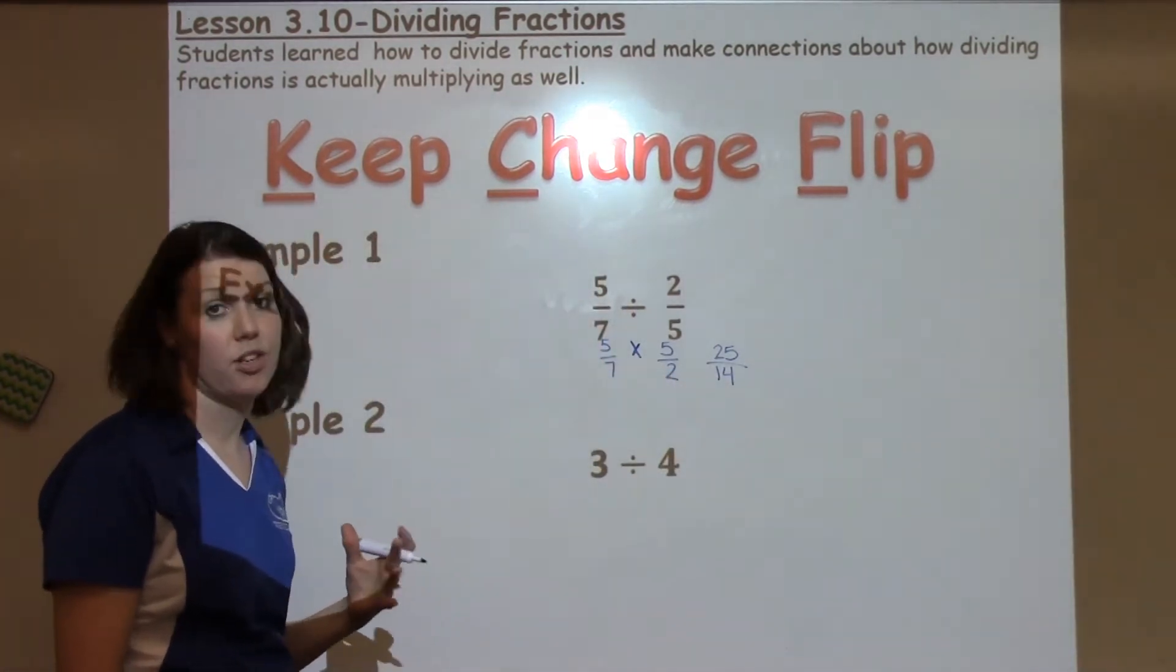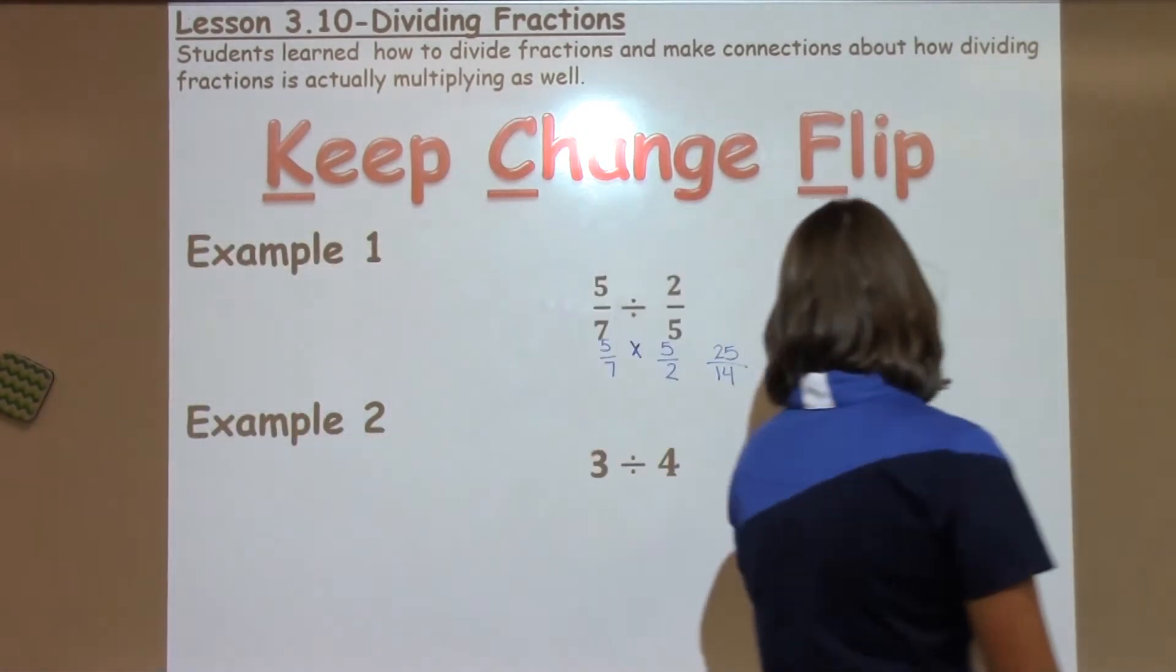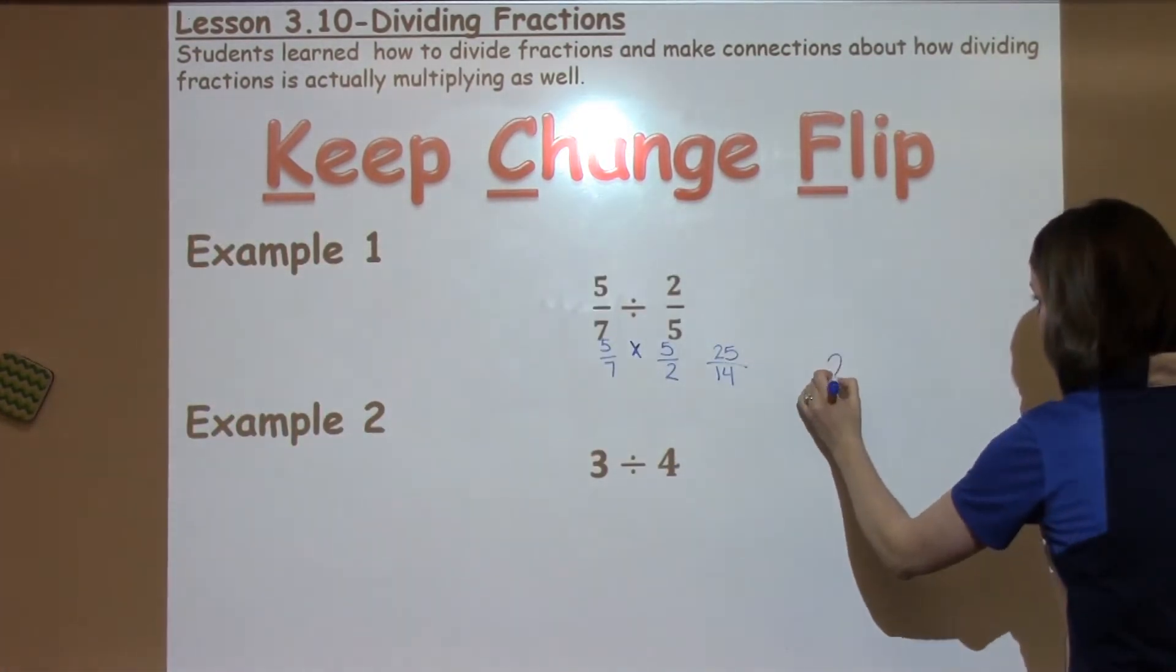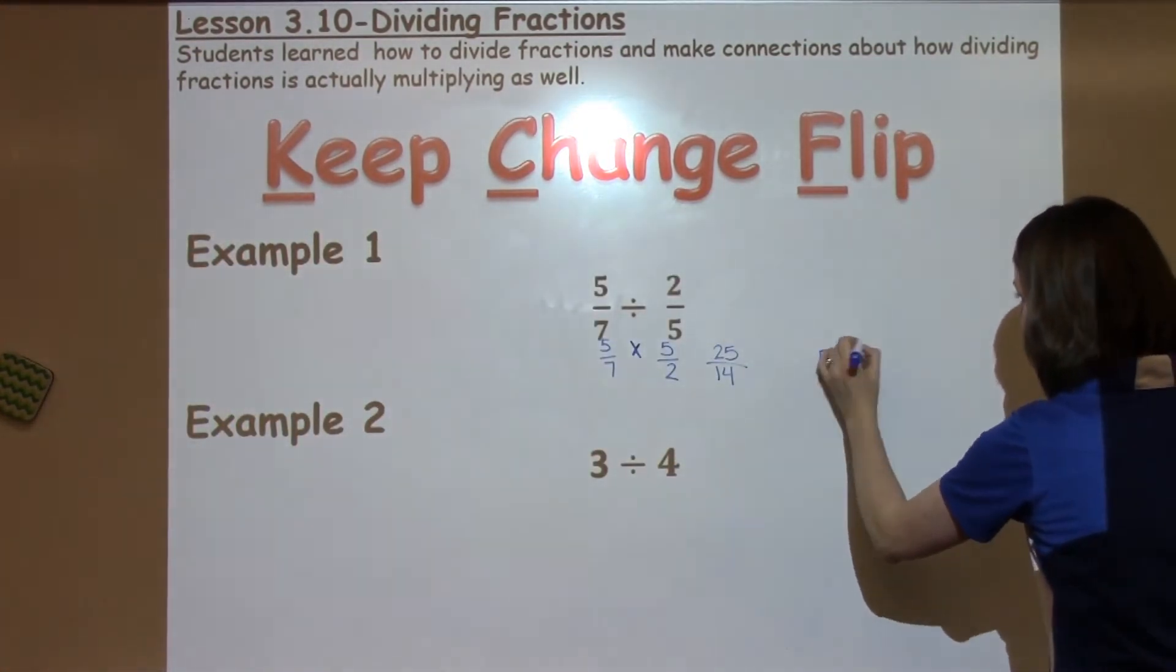Now you see that I have an improper fraction, so I have to go ahead and divide. When I'm going to do this, I'm going to take my 25 divided by my 14.